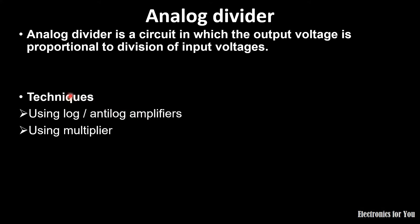Two techniques are used for division. The first one is using a log-antilog amplifier and the second one is using a multiplier. In this video I am going to explain the log-antilog amplifier approach, and in our next video we will see the analog divider using a multiplier.